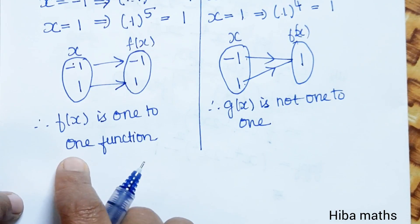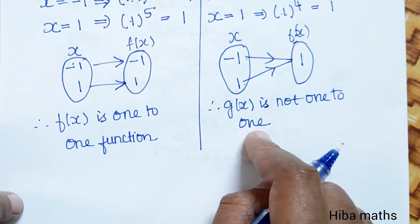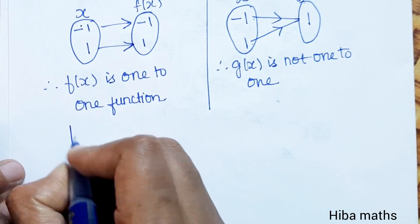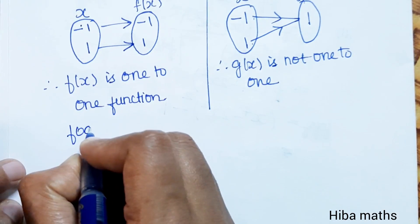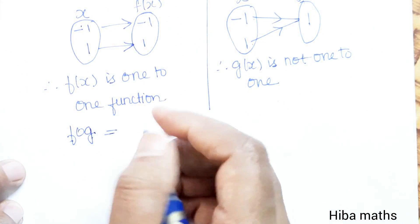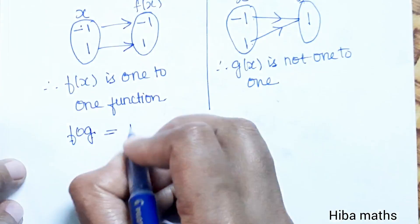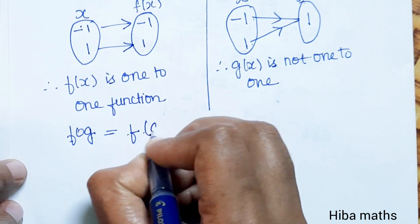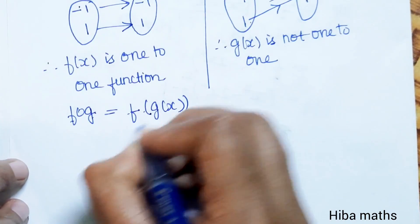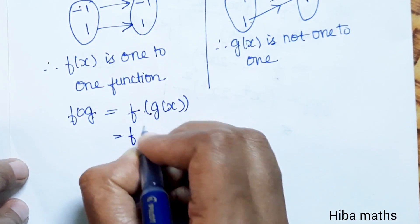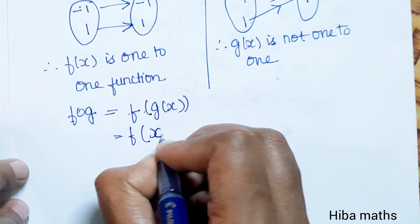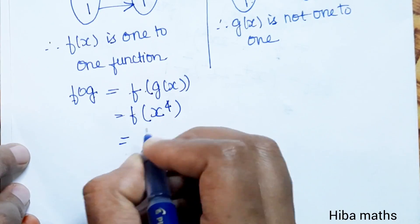So, f(x) is one-to-one, g(x) is not one-to-one. Now let us check f∘g. We need to find f of g(x), which means substituting g(x) inside f(x).